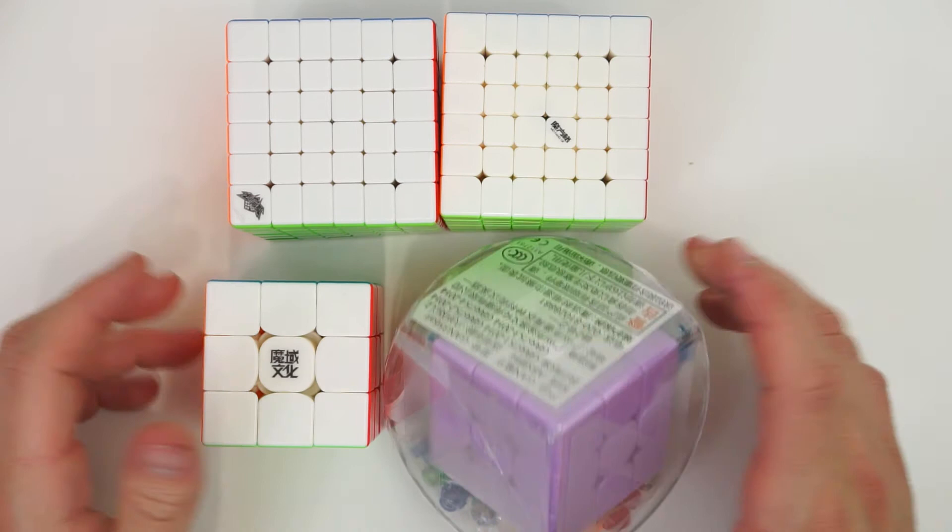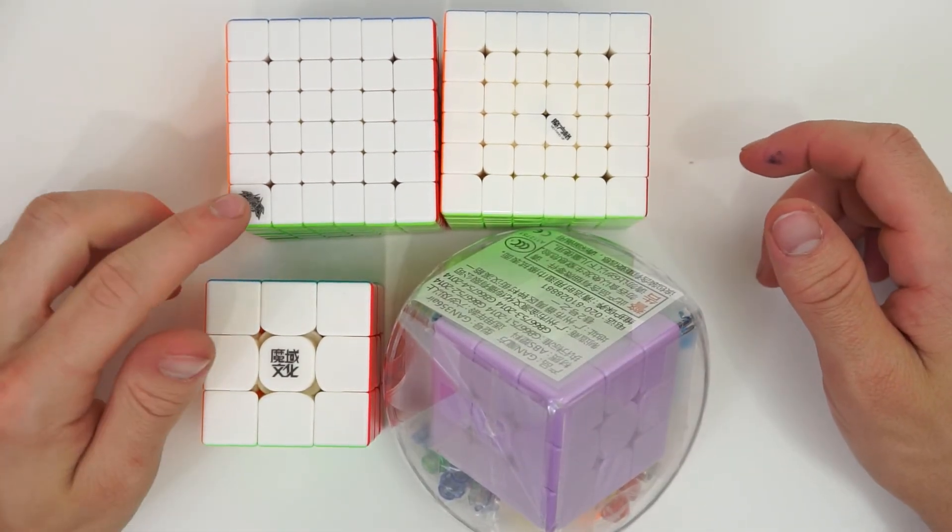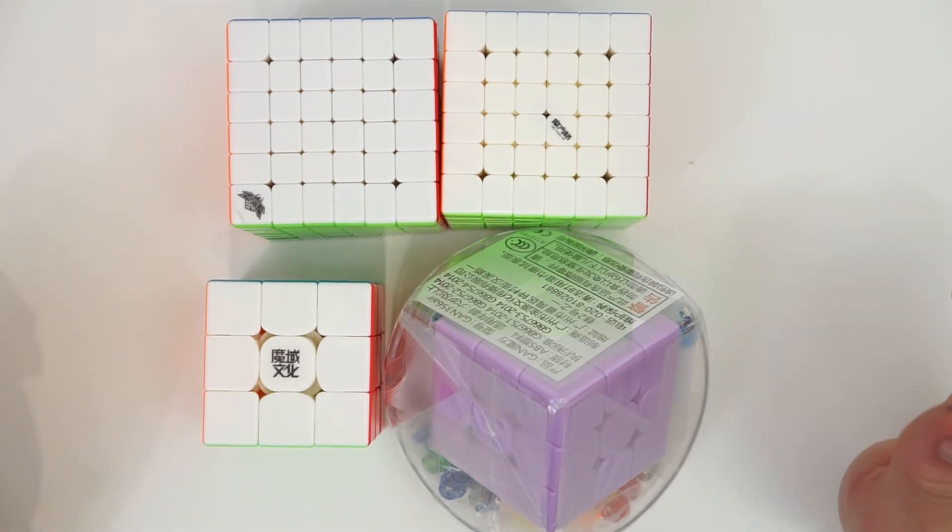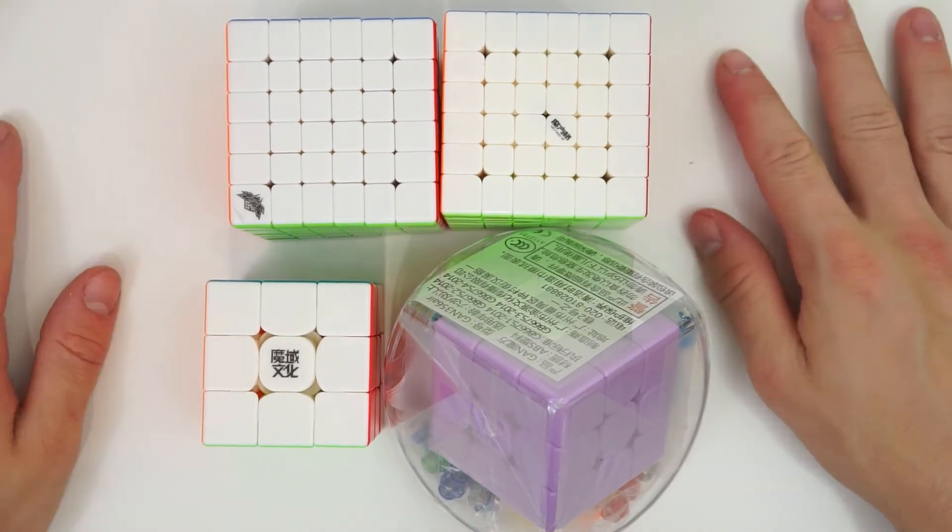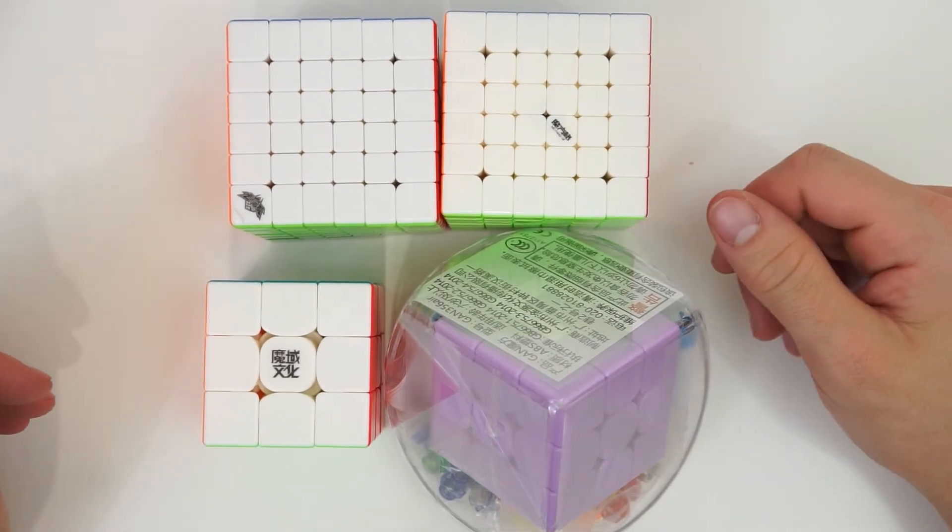So yeah, that's gonna be it for my quick unboxing of the Chi-Yi Wuhua, Cyclone Boys G6, and Moyu GTS V2. I hope you guys liked this video. Give it a thumbs up if you liked it. Give it a thumbs down if you didn't like it, and tell me why in the comments down below.